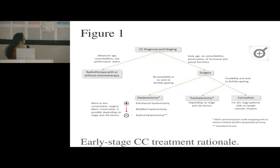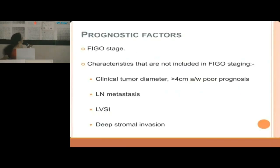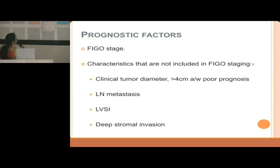Surgeries available include hysterectomy, trachelectomy, and conization. Different prognostic factors beyond FIGO staging must be considered: tumour more than 4 cm carries poor prognosis; lymph node metastasis, lymph vascular space involvement, deep stromal invasion more than 10 mm, and parametrial extension are all poor prognostic factors. Uterine body involvement, though not in FIGO staging, increases the rate of metastasis.